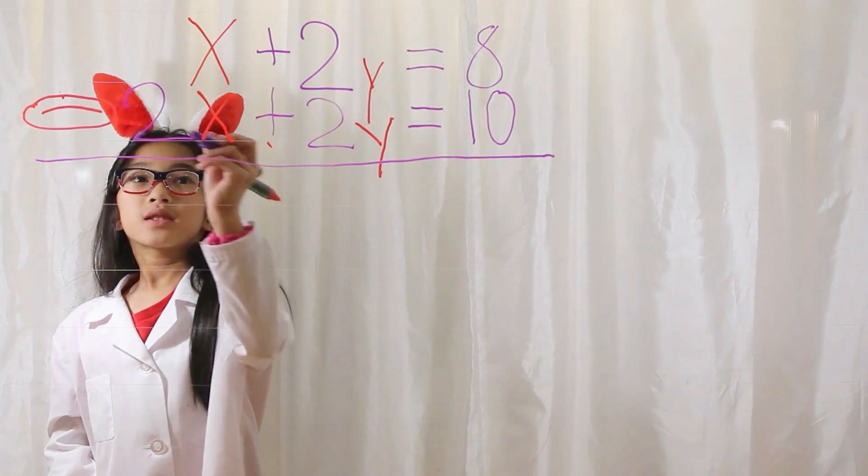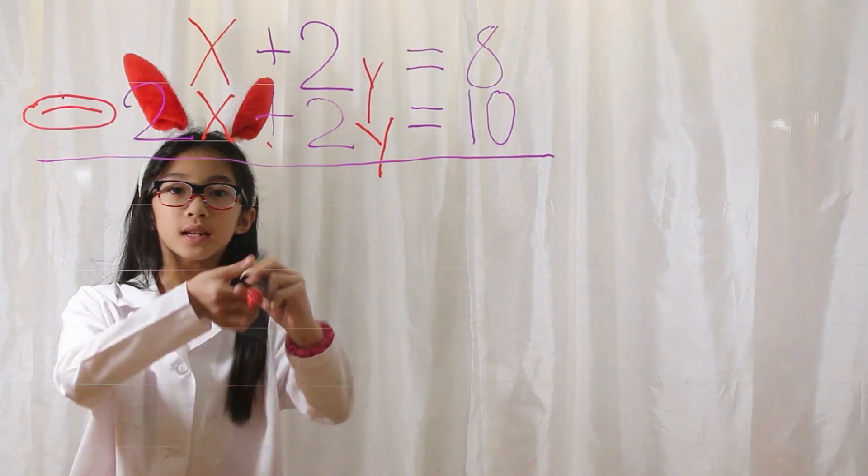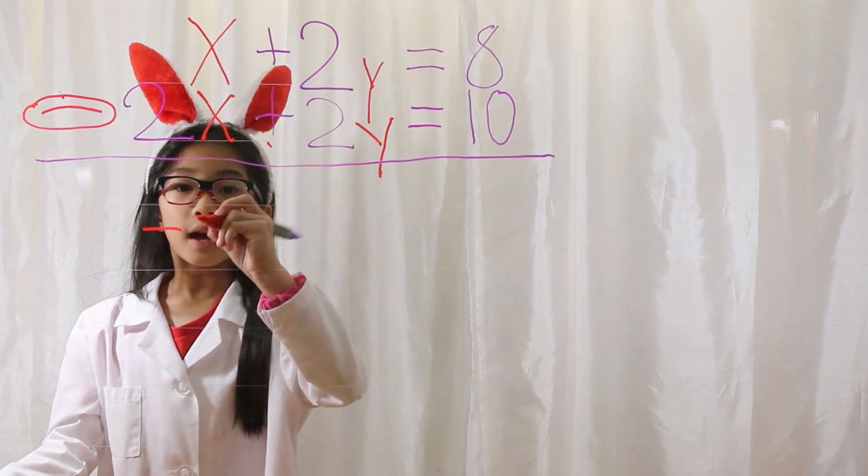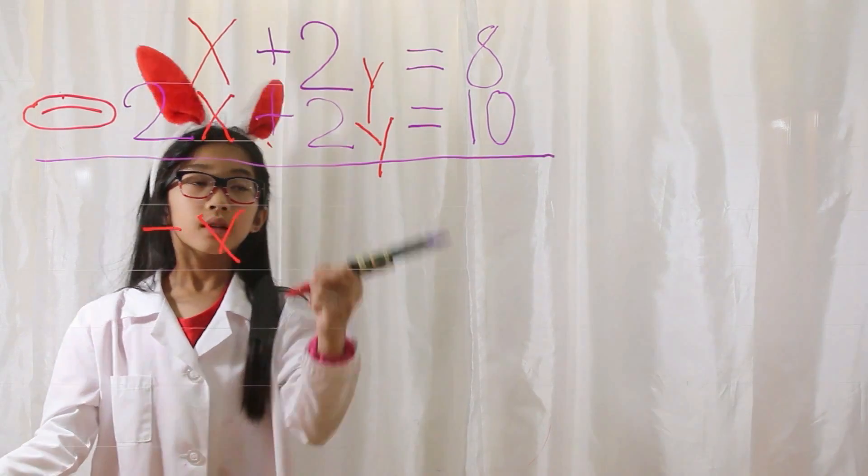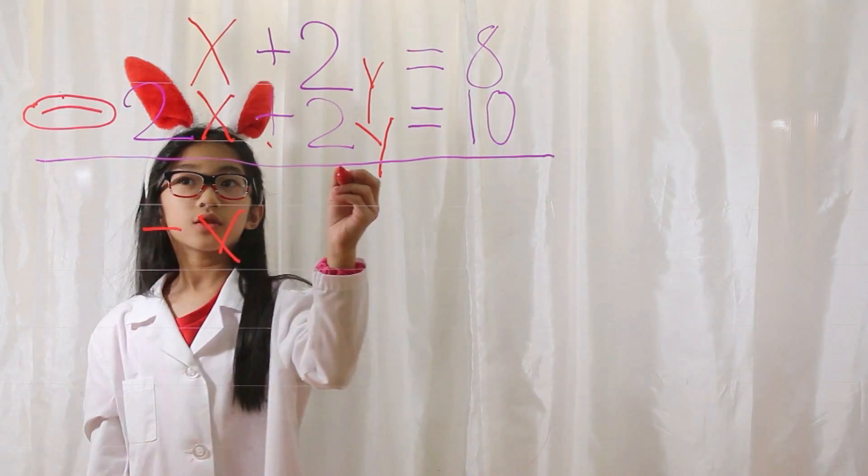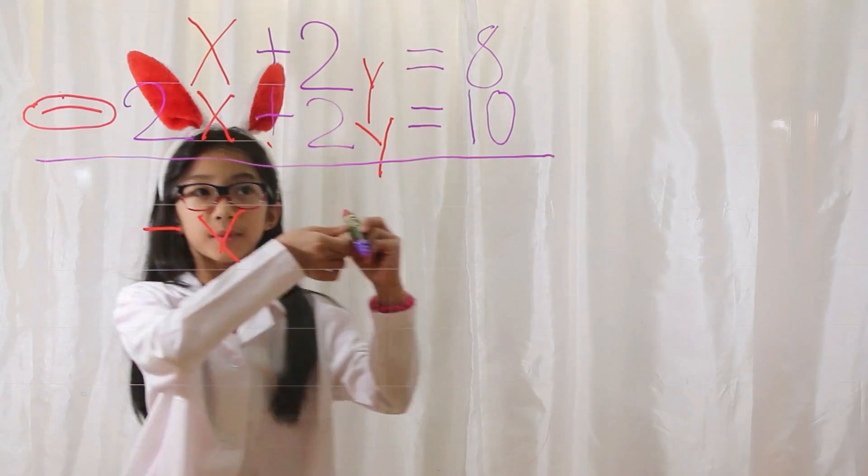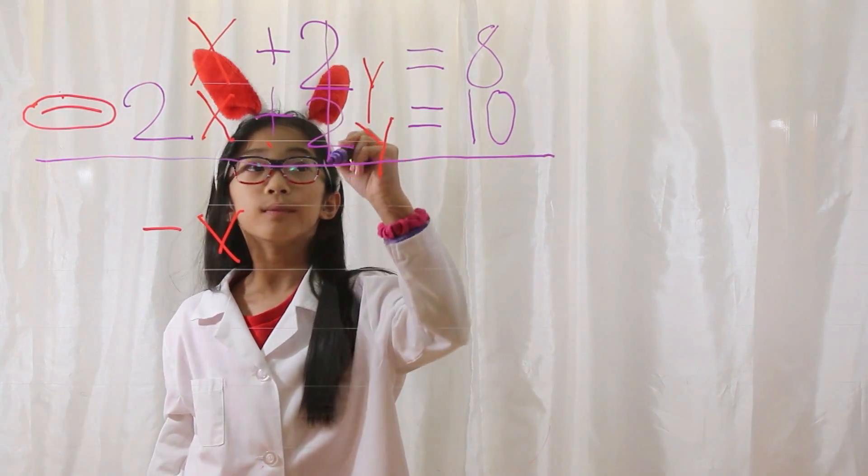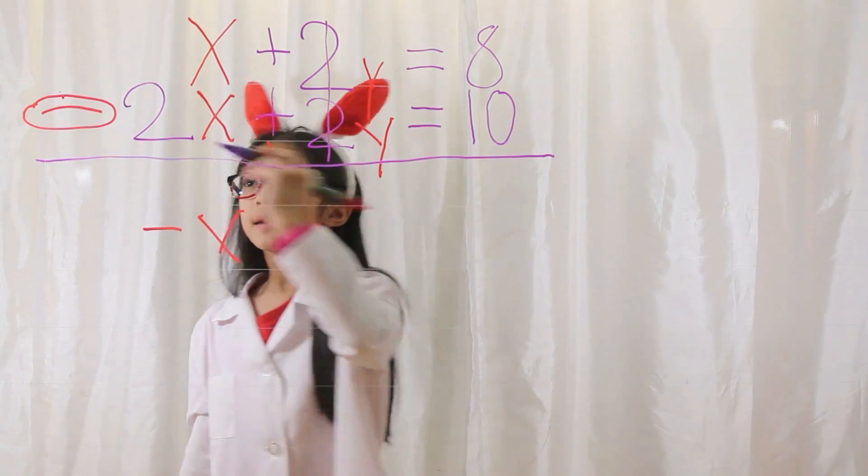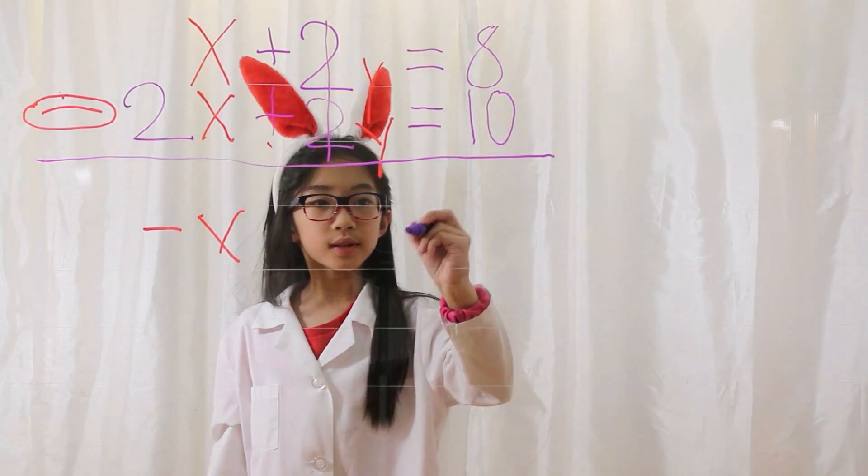x minus 2x equals negative x, 2y minus 2y cancels because it is equal to 0, and then 8 minus 10 equals negative 2.